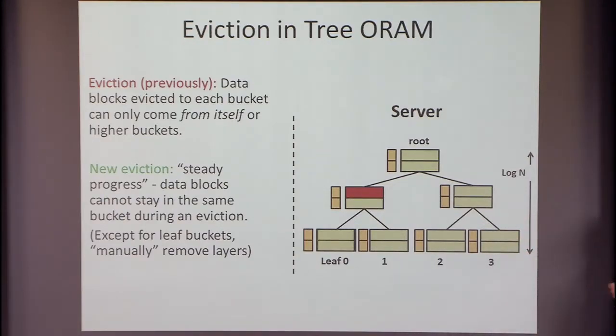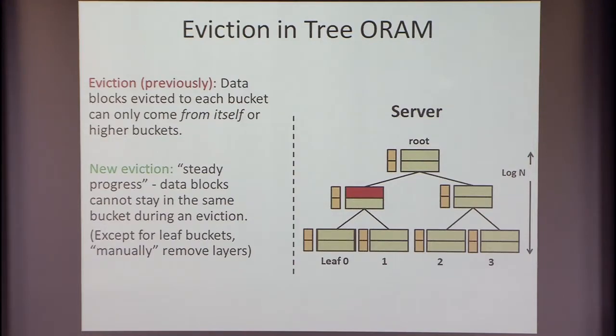The main fix here is to have a new eviction strategy — a variant of previous ones — that guarantees some sort of steady progress. Data blocks cannot stay in the same place during evictions; they always move down. Whenever you touch a block, it moves somewhere — it moves down the tree. This ensures that we can bound the number of layers of encryption on each block by log n.